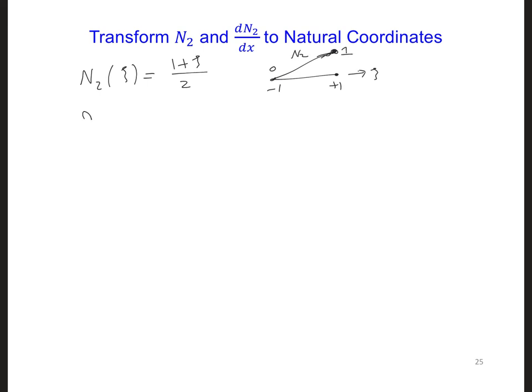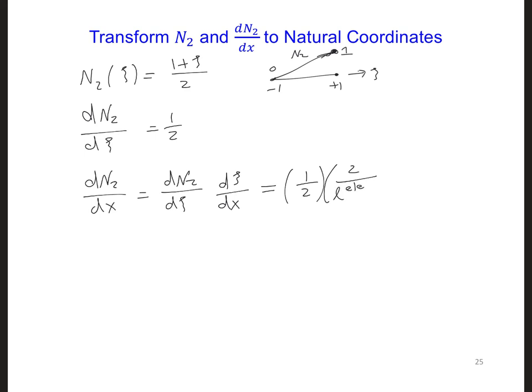So then dN2/dpsi is equal to 1/2, and then dN2/dx is equal to dN2/dpsi times dpsi over dx, which is something we solved for on the last slide. So we just get 1/2 times 2 over the length of the element.